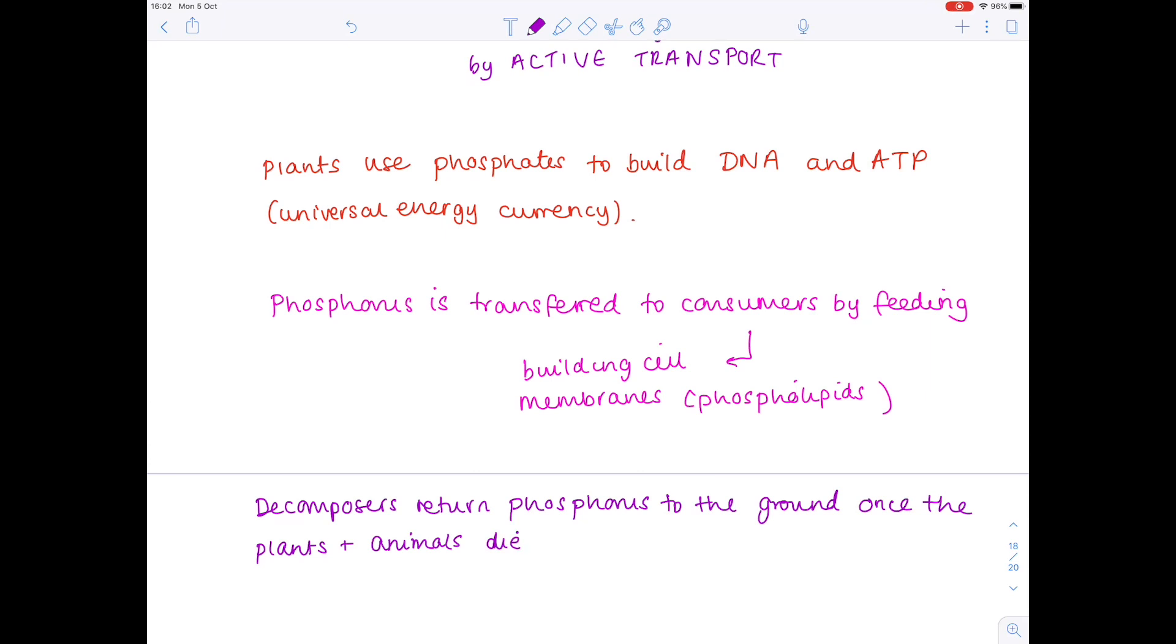Now, the crucial difference between this and the nitrogen and carbon cycles is that there is no gaseous component. It does not involve the atmosphere. So, with the carbon cycle, we know that respiration released carbon dioxide. With the nitrogen cycle, we know that denitrifying bacteria converted nitrates to nitrogen gas and released that into the air.